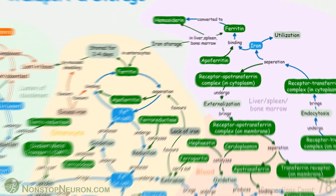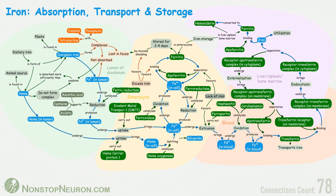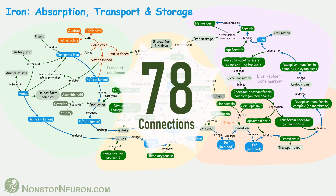That's all about absorption, transport and storage of iron. We made a total of 78 connections in this concept map. I hope you got them all.